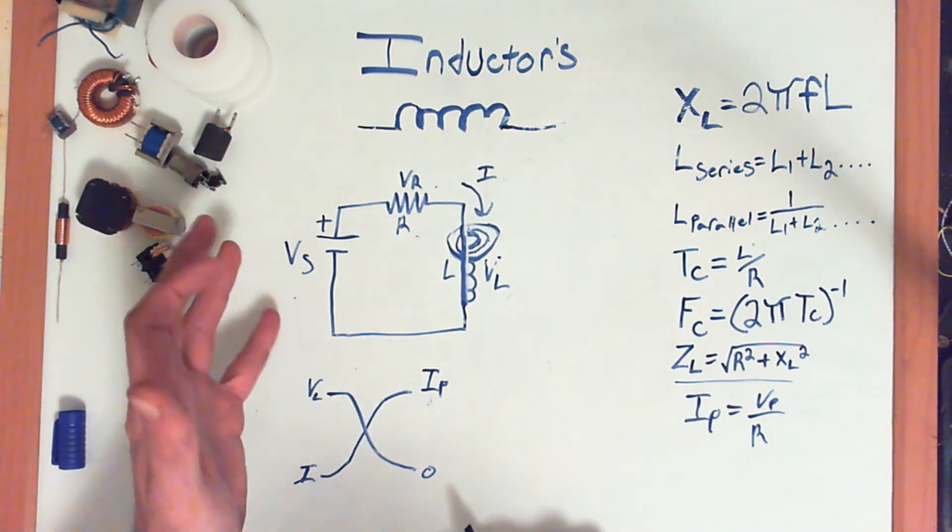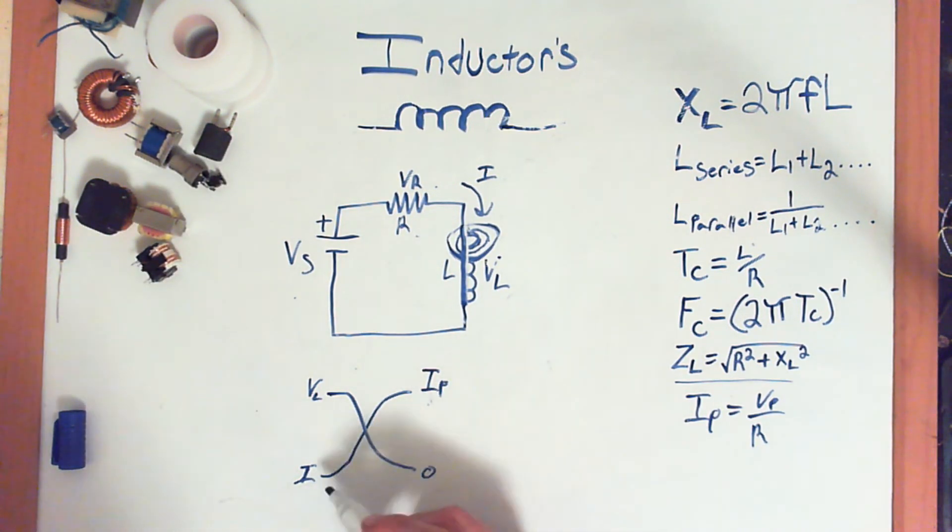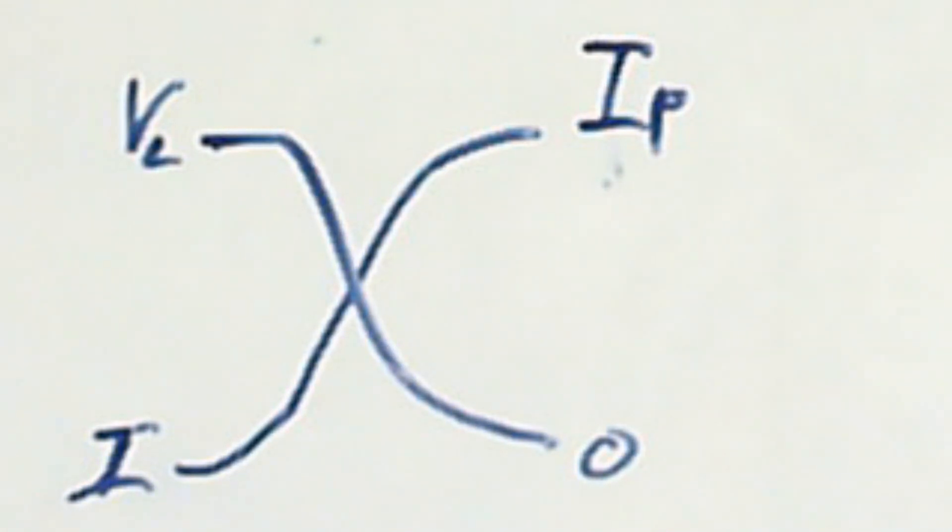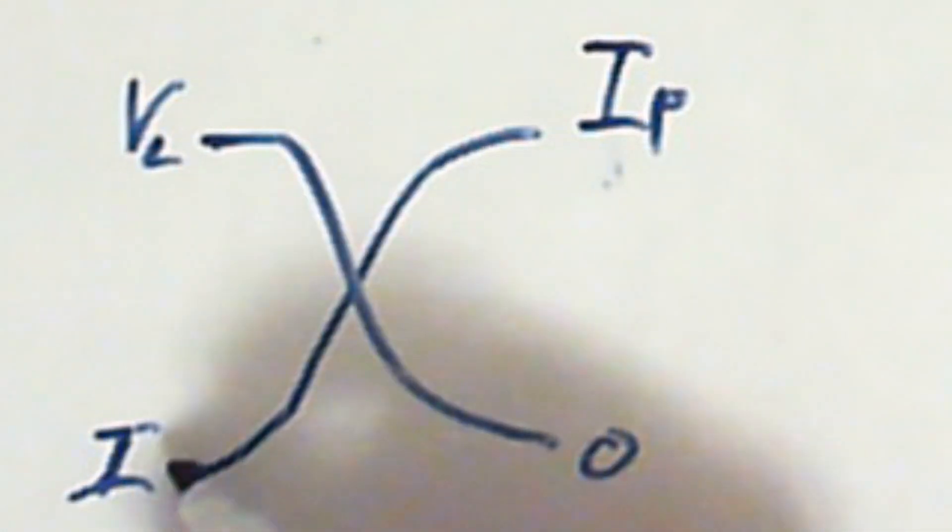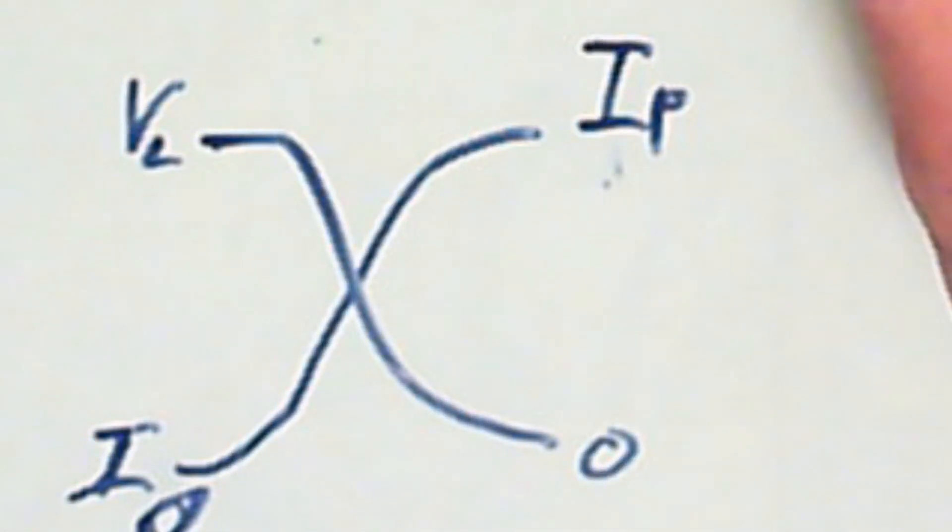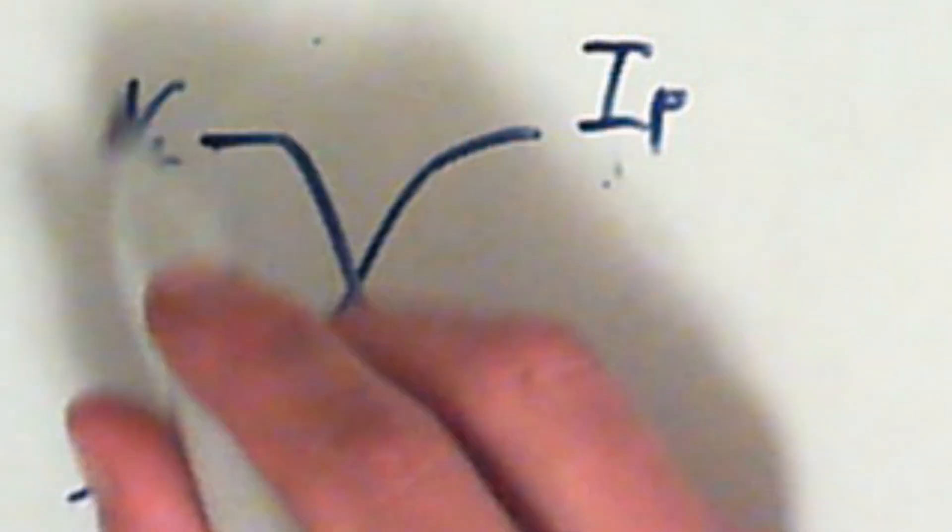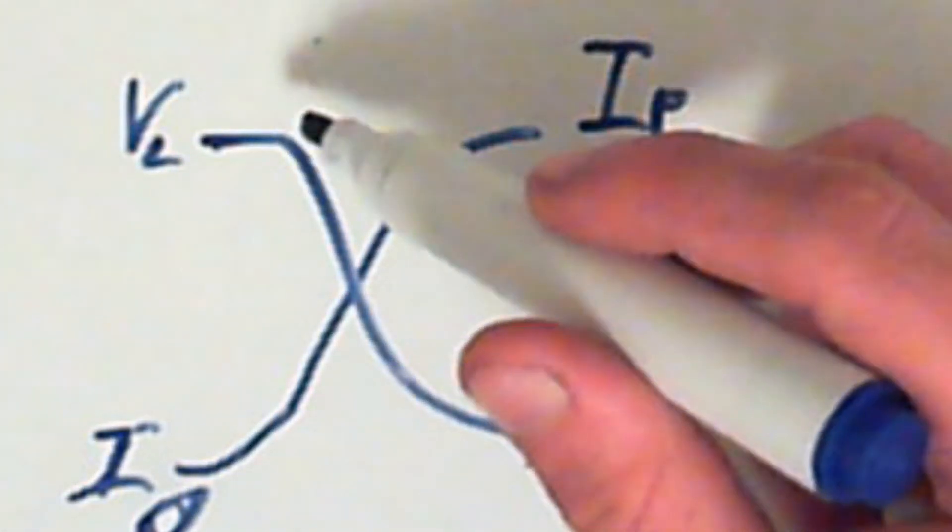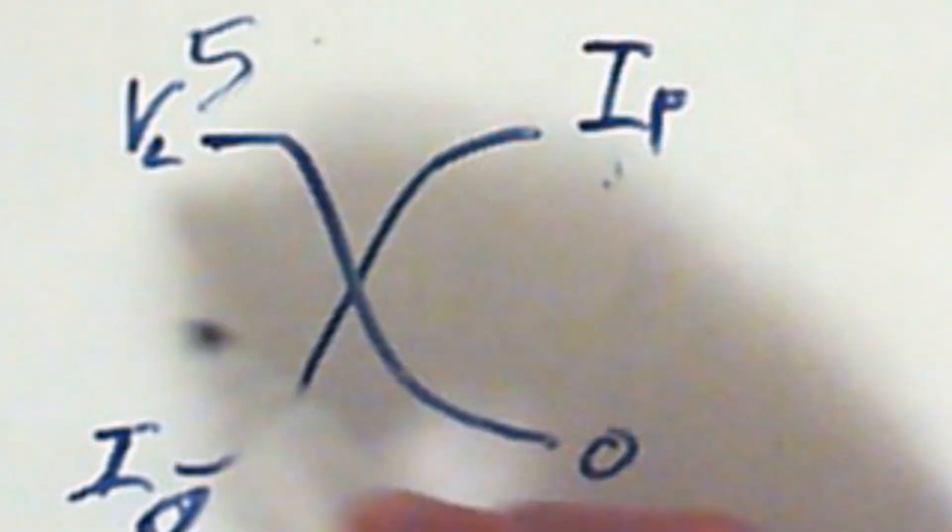So, in this circuit right here, when the battery is connected, the amperage, let me zoom in. Sorry. So, the amperage, down here, is going to be at zero. And, the voltage, or VL, which is the voltage drop across the inductor, right here, it's going to be at the supply voltage. So, if we had a 5 volt supply, this is going to be at 5 volts when the battery is connected.